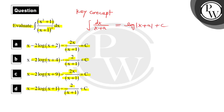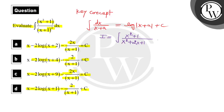In this question, we are given x² + 1 in the numerator. Let's set I equal to the integral. So I = ∫(x² + 1) / (x+1)² dx. Now the denominator (x+1)² expands to x² + 2x + 1. So we have I = ∫(x² + 1) / (x² + 2x + 1) dx. Now let's simplify this.